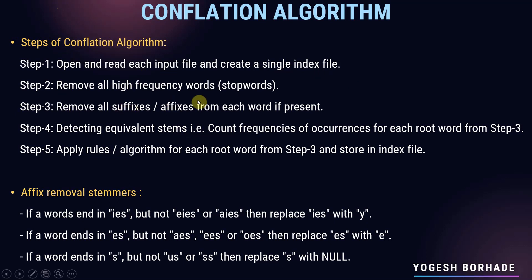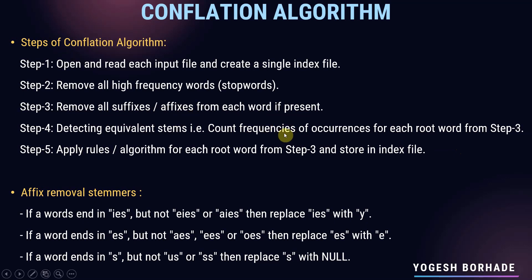Step 2 — remove all high frequency words, that is stop words, by comparing them with the list of stop words. Step 3 — remove all suffixes and affixes from each word if present. Step 4 — detect equivalent stems by counting the frequency of occurrences for each root word from step 3; if words are repeated, remove the duplicates. Step 5 — apply rules or algorithms for each root word from step 3 and store the result in the index file.